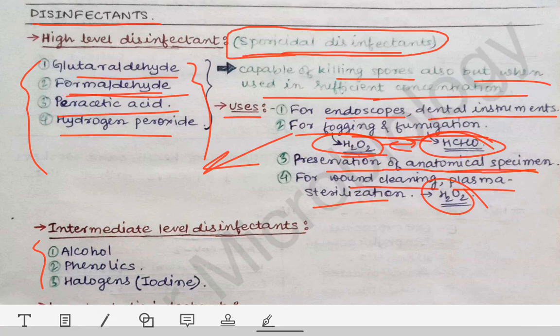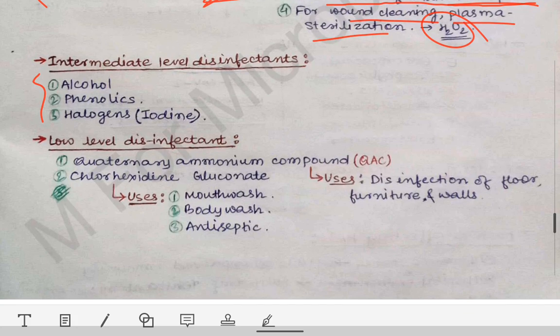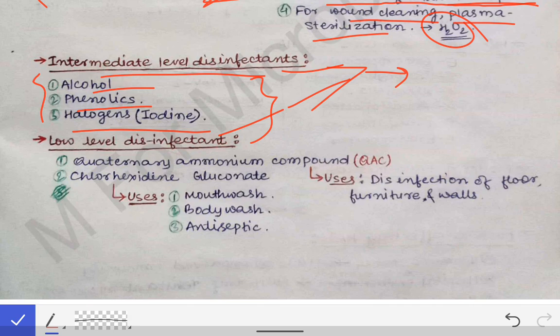Next are intermediate-level disinfectants. Just remember the names: these are alcohols, phenolics, and halogens or iodines. They cannot kill spores at any concentration. Both intermediate-level and low-level disinfectants cannot kill spores at any concentration, whereas high-level disinfectants can kill spores only at a very high or sufficient concentration. In halogens, iodine is the most potent.